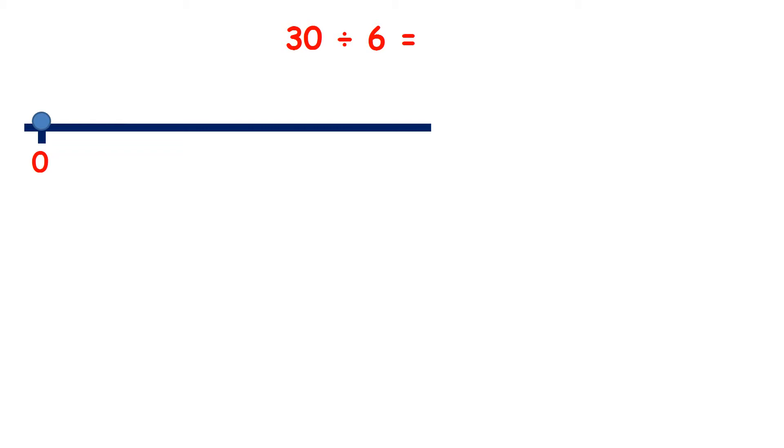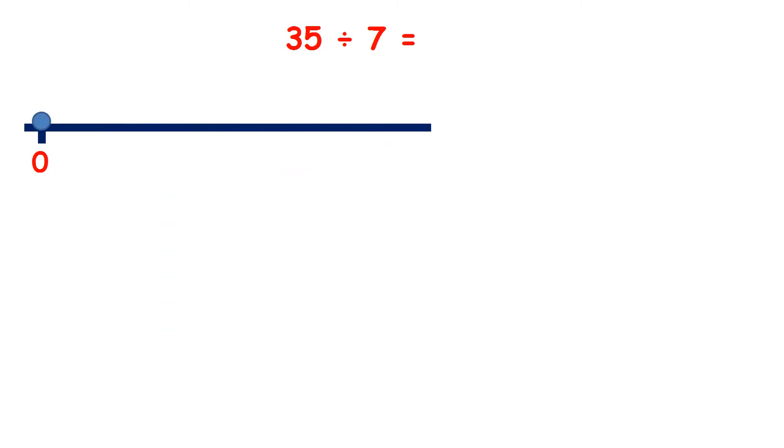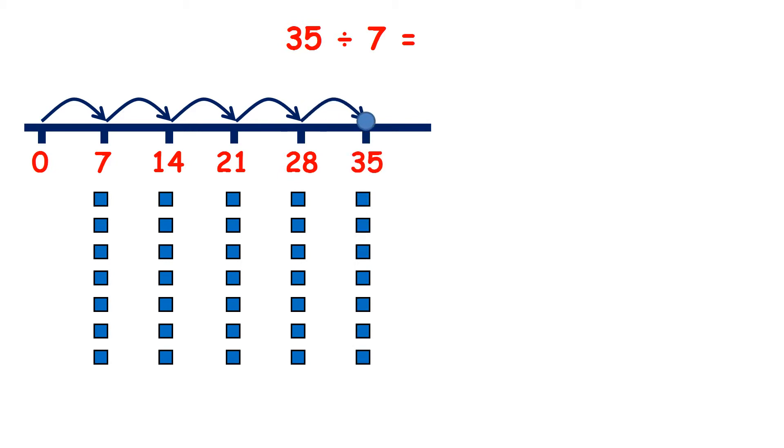Now 30 divided by 6, so counting up in steps of 6, we have 6, 12, 18, 24, 30. So we've made 5 groups of 6. Now 35 divided by 7, so we can count 7, 14, 21, 28, 35. So that's 5 jumps, or 5 groups of 7, so there's our answer.